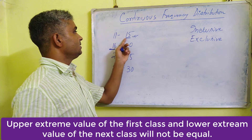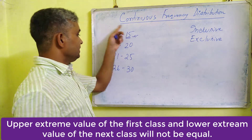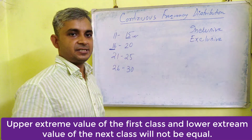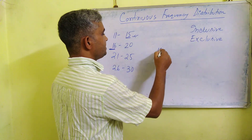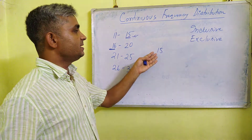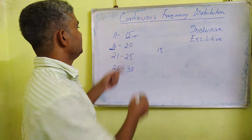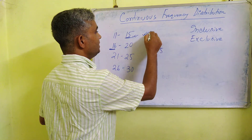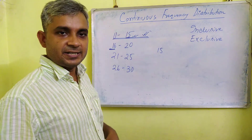There is a gap — the values are not equal or the same. This group of data is called inclusive data or class limit. For example, if one variable is 15, where does this 15 fall? See here — this 15 is included in this group. So 15 will be included in this group.